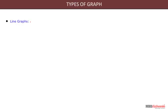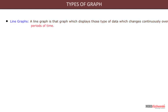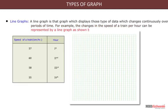Line graphs. A line graph is that graph which displays those types of data which changes continuously over periods of time. For example, the changes in the speed of a train per hour can be represented by a line graph as shown below.